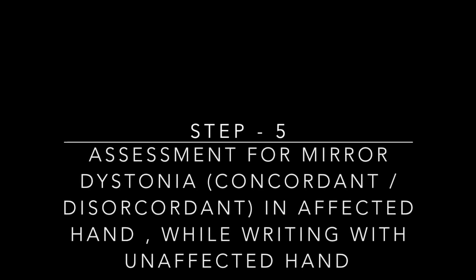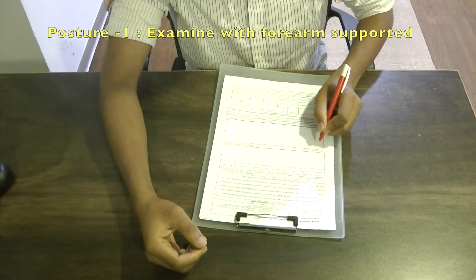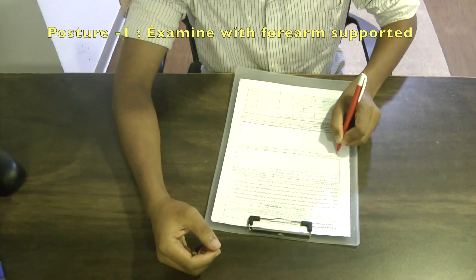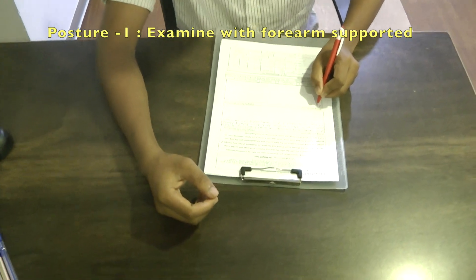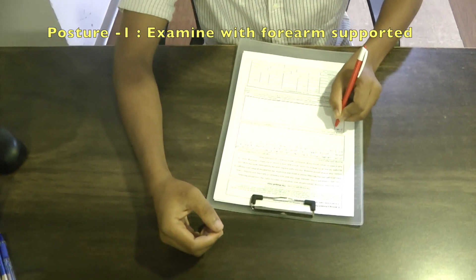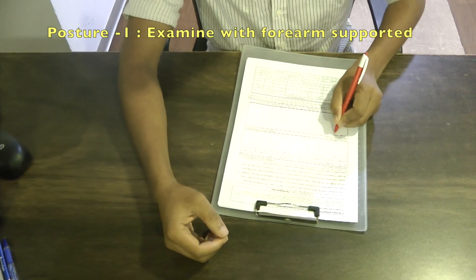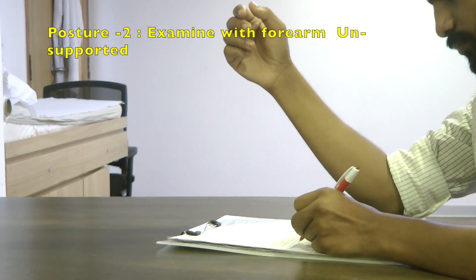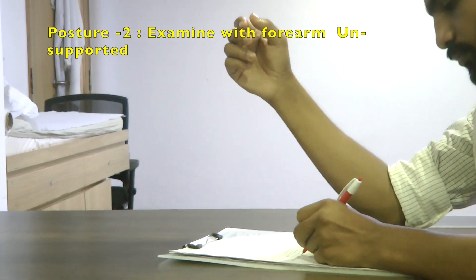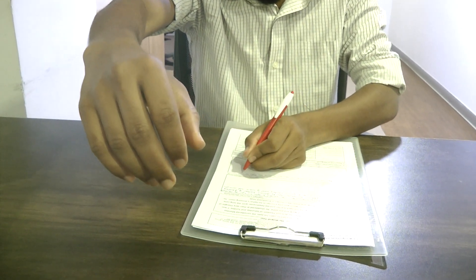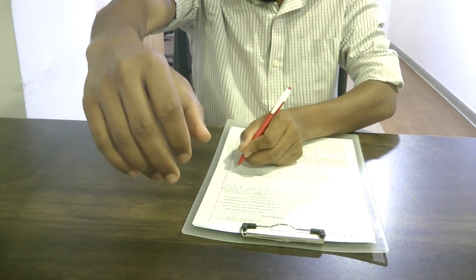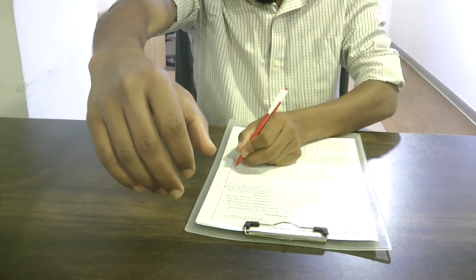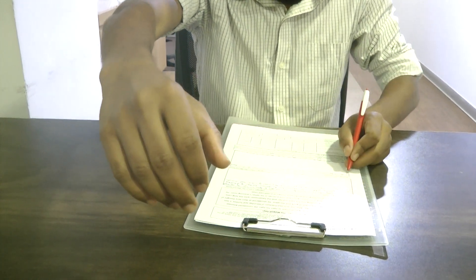The next most important step is to look for mirror dystonia, which is a critical step in patients with writer's cramp. This is done by asking the subject to write with non-dominant hand and then dystonic movements in the affected hand are noted. This can be done by keeping the forearm hands supported on table in semi-prone position, keeping the forearm unsupported but arm supported at elbow, and completely unsupported arm. This assessment helps to differentiate whether the affected hand dystonic movements are primary or compensatory.